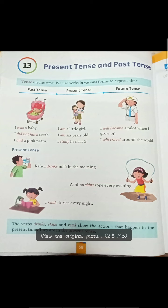Past tense: I was a baby. I did not have teeth — 'did not' meant that my teeth were not there. I had a pink pram — 'had' is used here as past tense.